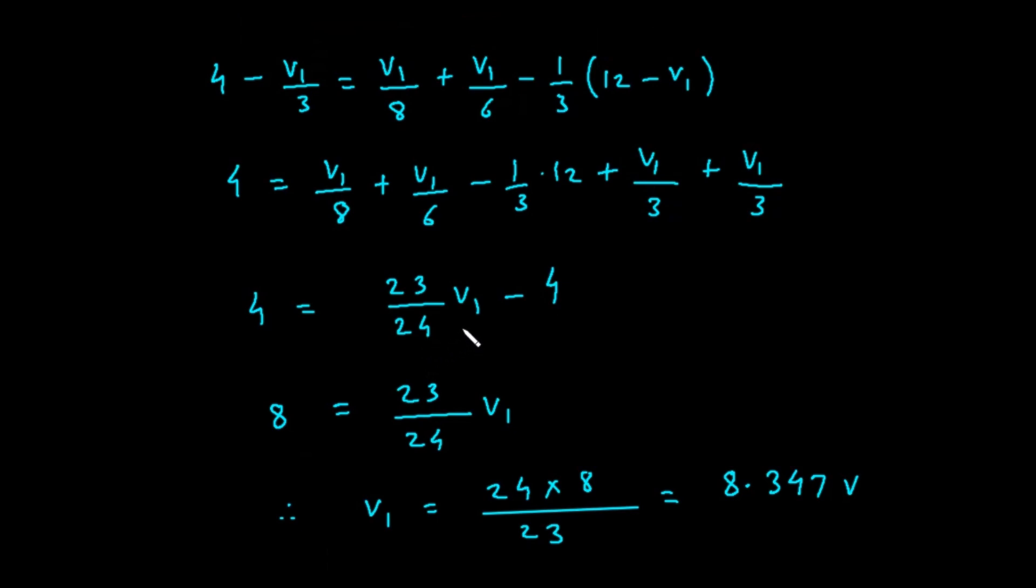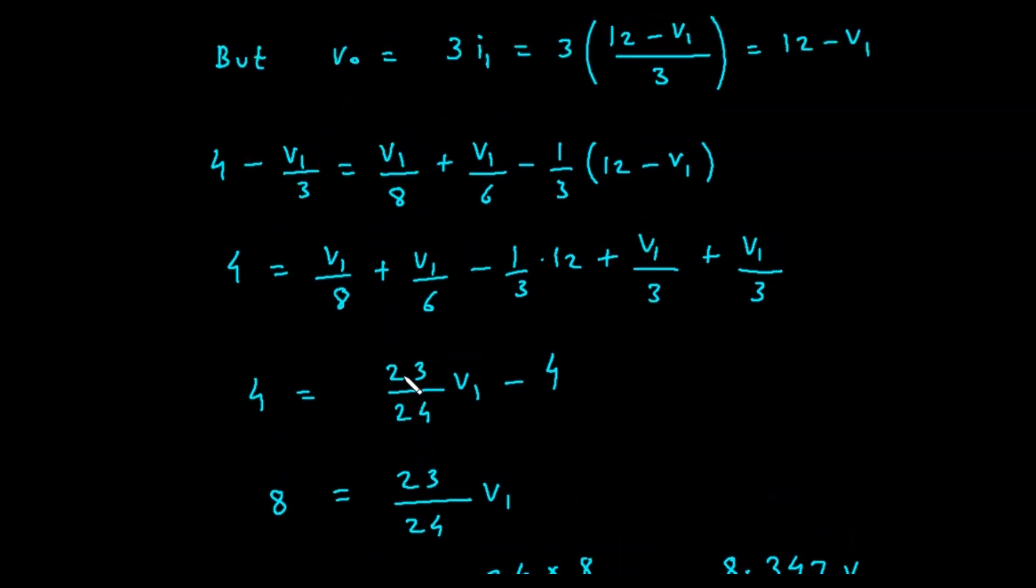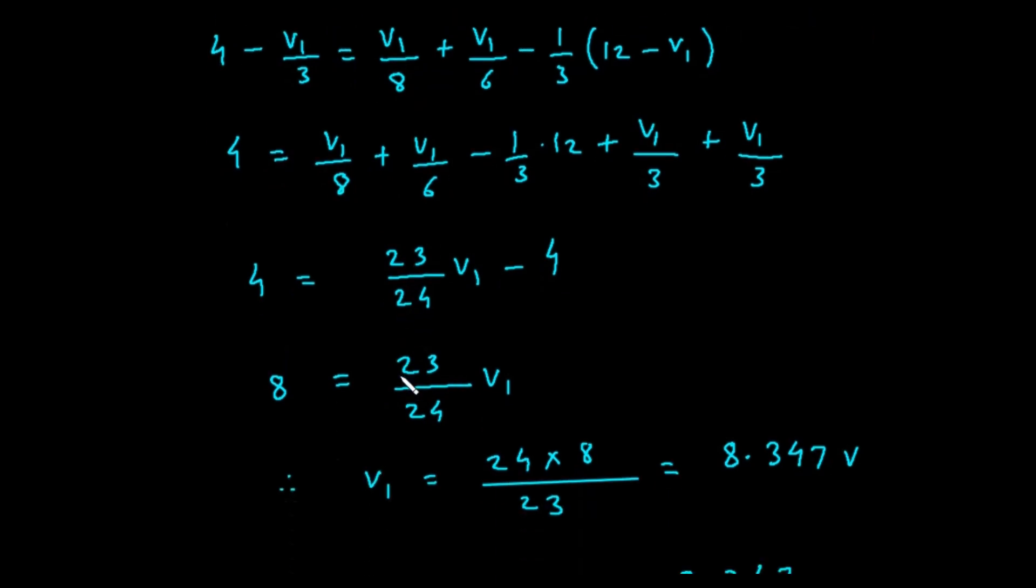So 8 equals 3 times V sub 1 over 24 plus 4 times V sub 1 over 24 plus 16 times V sub 1 over 24. Adding the numerators, we get 8 equals 23 times V sub 1 divided by 24.